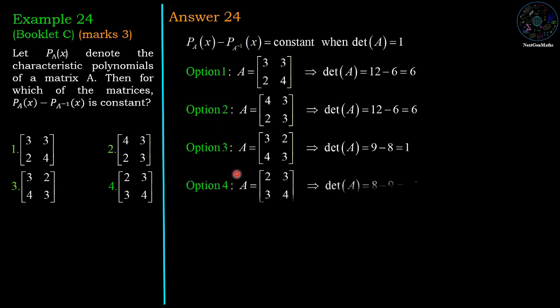We will check fourth option also. So A is equal to [[2, 3], [3, 4]], determinant is 8 minus 9 which is minus 1, so which is not also 1 and the correct answer is third option.